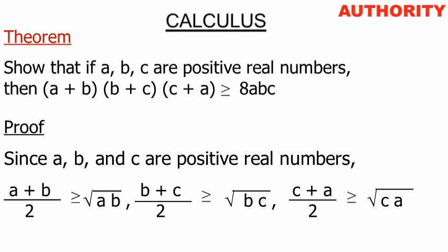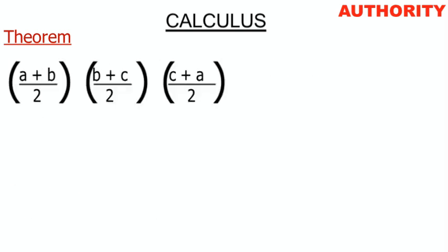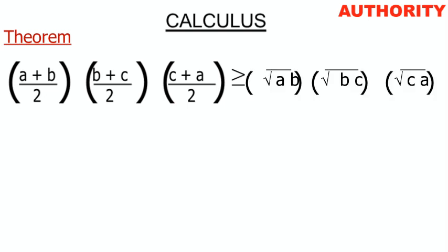Both sides have the greater-than-or-equal-to sign, so we can put all the arithmetic means on one side and all the geometric means on the other side. We get: (a+b)/2 · (b+c)/2 · (c+a)/2 ≥ √(ab) · √(bc) · √(ca).